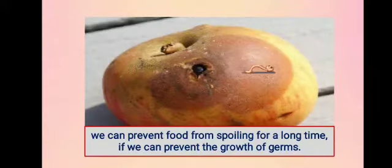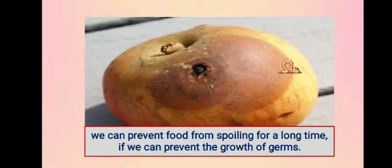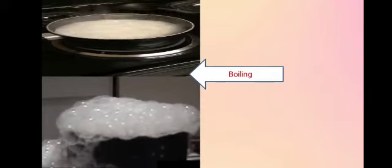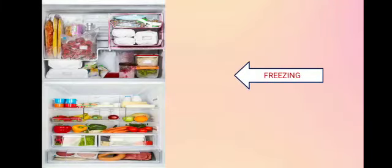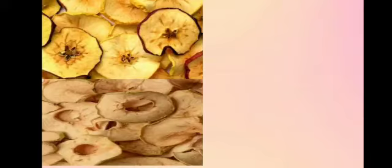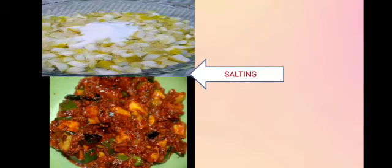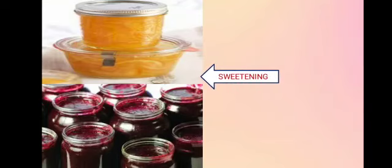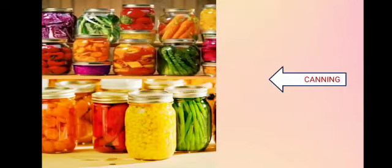We can prevent food from spoiling for a long time if we can prevent the growth of germs. This can be done in a number of ways like: Boiling, Freezing, Drying, Salting, Sweetening, and Canning.